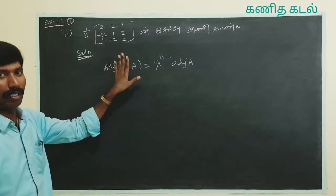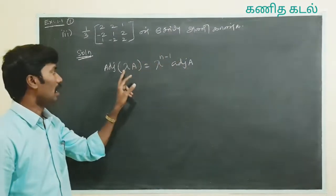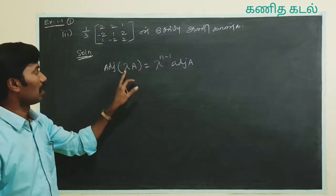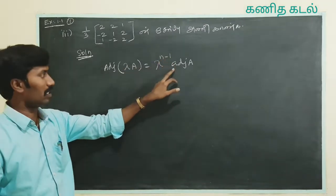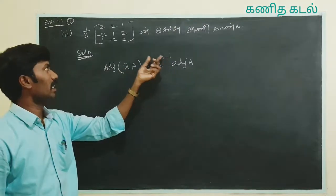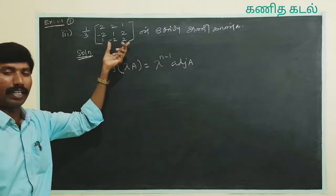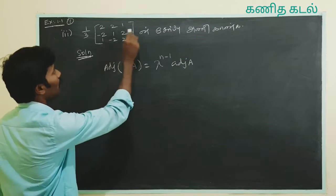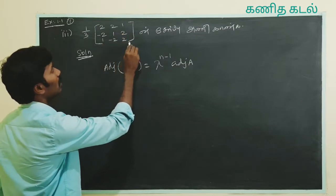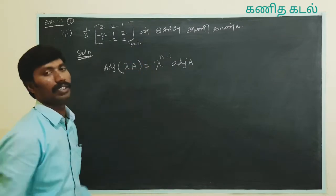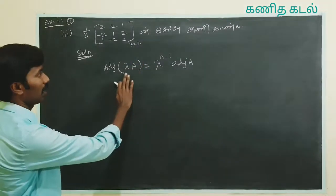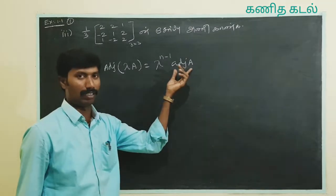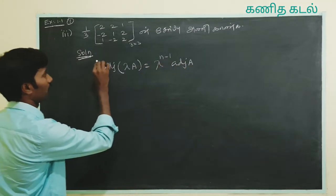Adjoint — the whole transpose. Add a matrix to multiply lambda. What is the formula? Lambda power n minus 1 into adjoint A. This is the important formula — the order of the matrix.